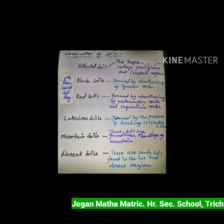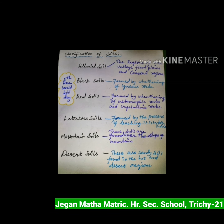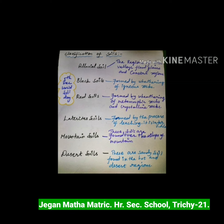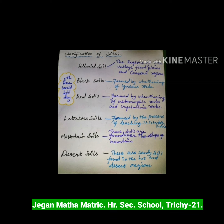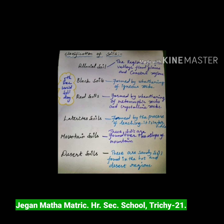Next, laterite soil. These are the typical soils of tropical regions. These soils are formed by the process of leaching. It is infertile but suitable for plantation crops of tea and coffee.